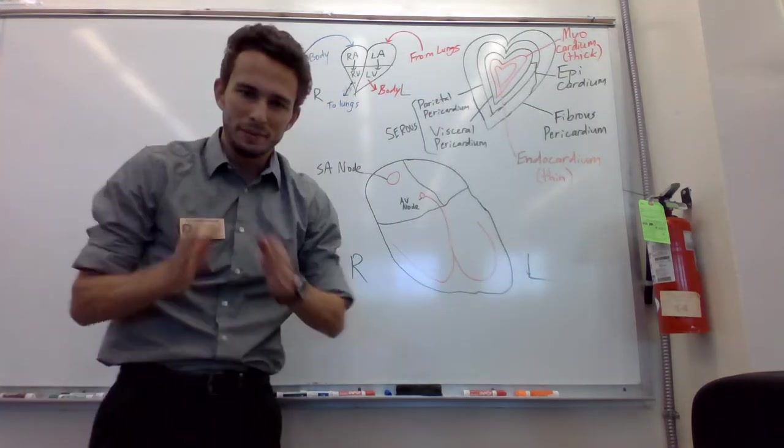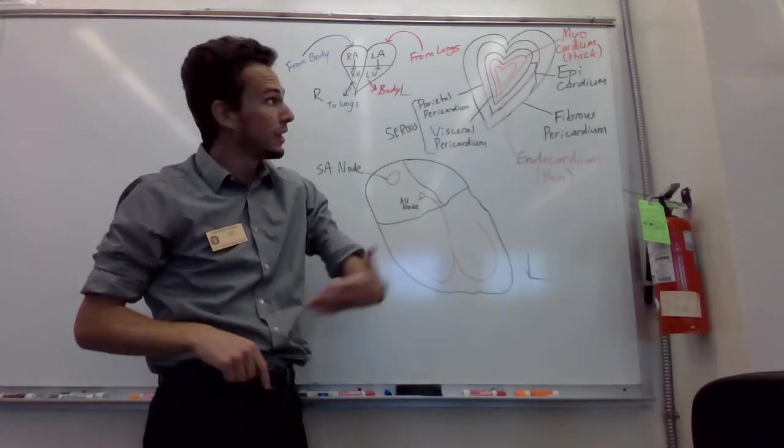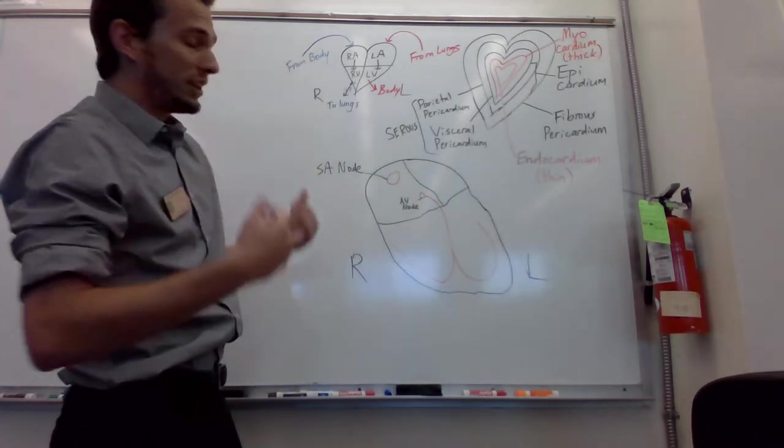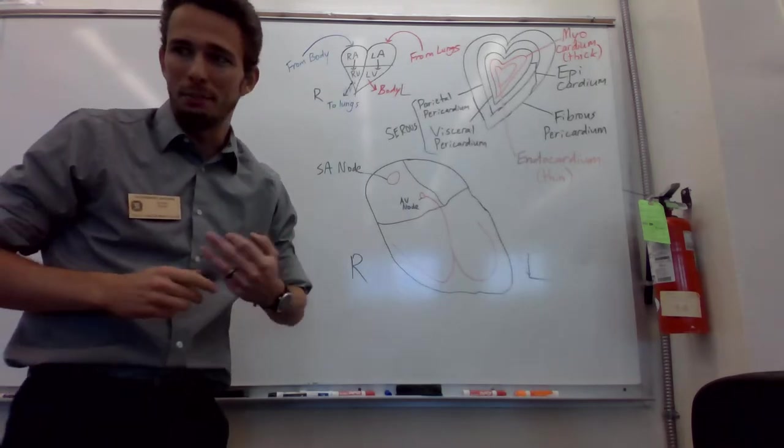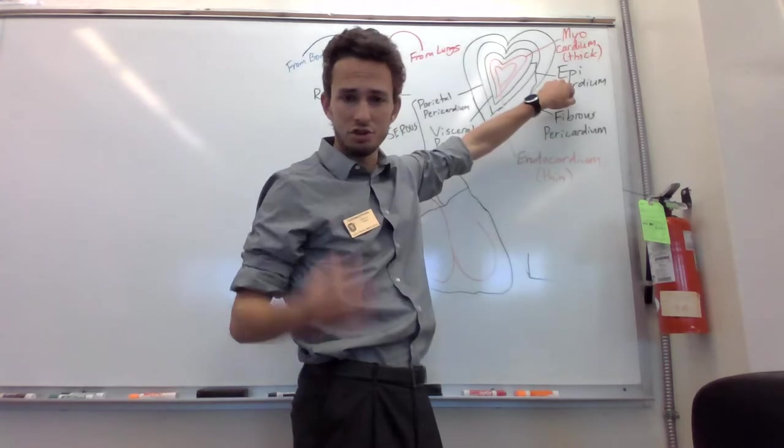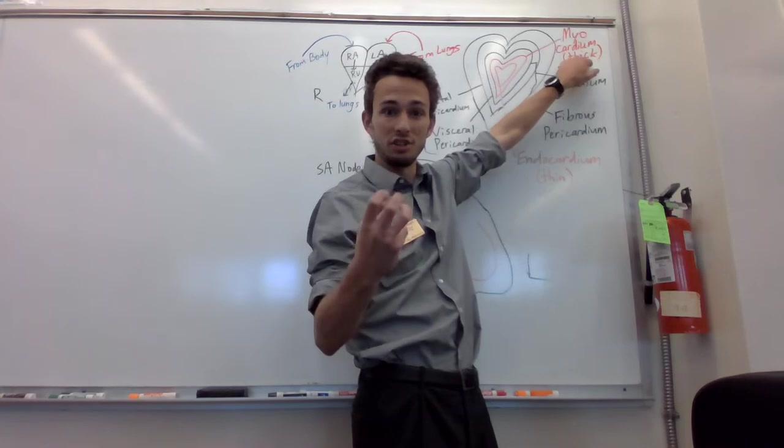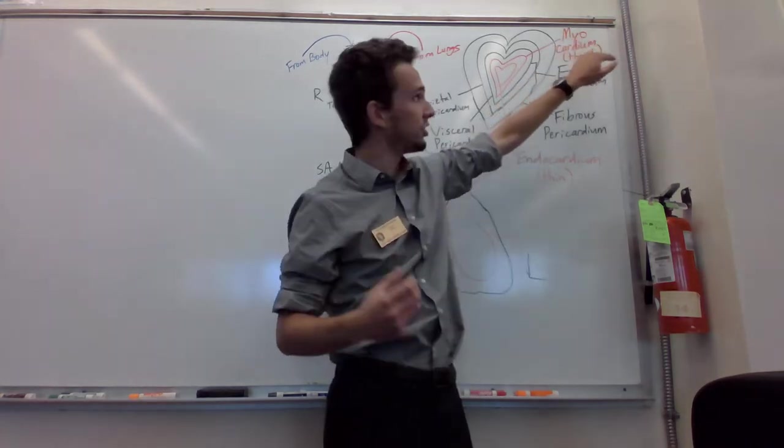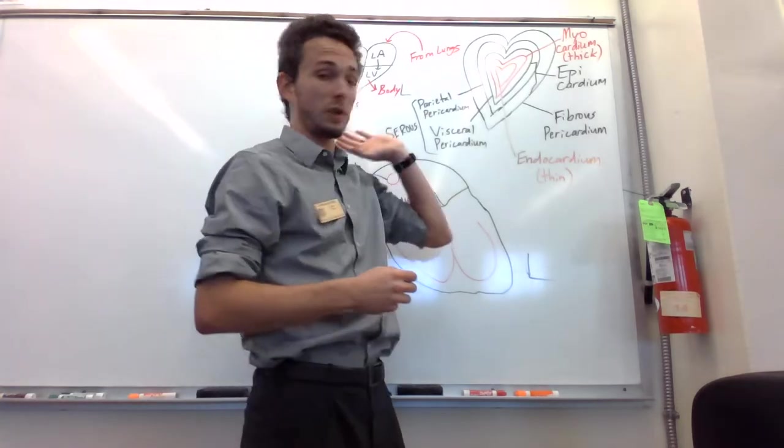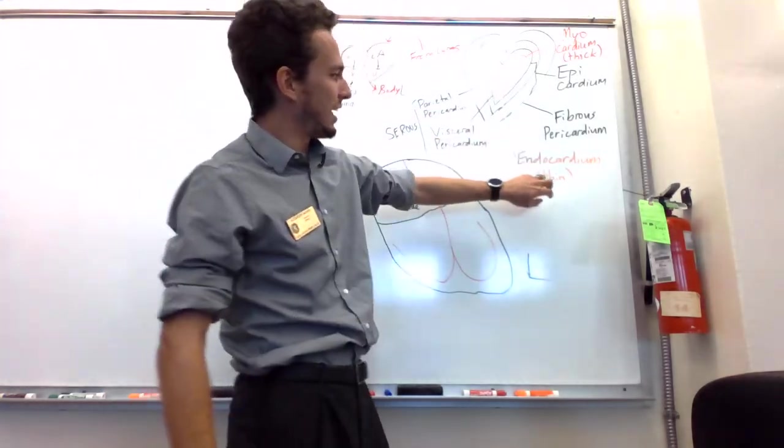Now let's talk a little bit about the layers of the heart. So if we were to cut the heart open and look at the layers of the heart, we'd see several distinct layers. We divide these into three main parts and that's going to be the epicardium, the myocardium, the thick muscular layer, and the endocardium.